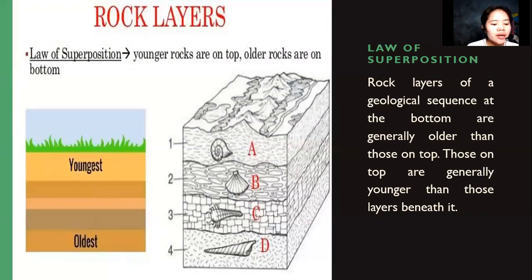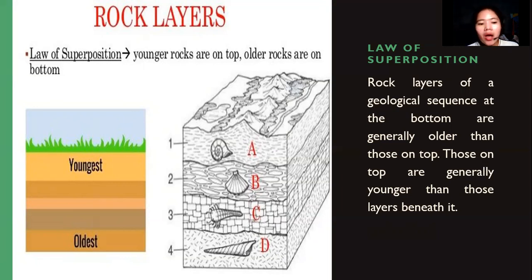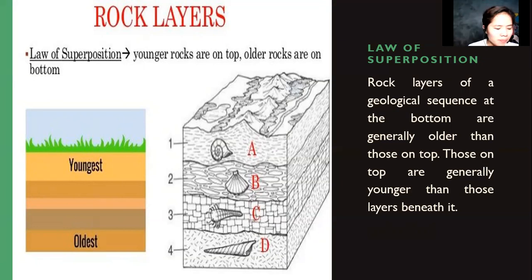Rock layers of a geological sequence at the bottom are generally older than those on top. Always remember: with the law of superposition, the oldest is always at the bottom while the youngest is always at the top.